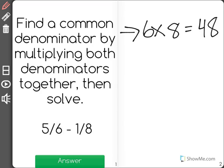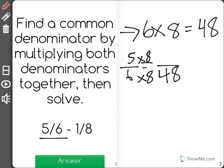Now I need to find equivalent fractions for each of these. So I know 5 over 6 will equal something over 48. To get from 6 to 48, I have to multiply by 8. So I'll do the same on the top to find out that 5/6 is equal to 40 over 48.